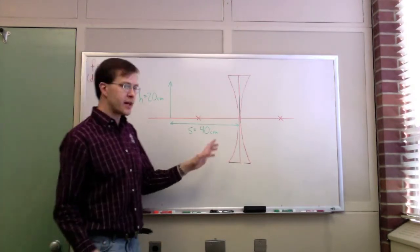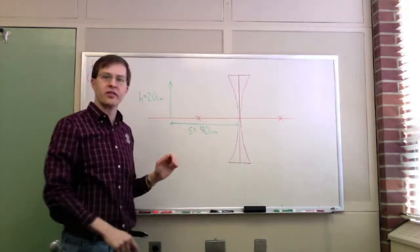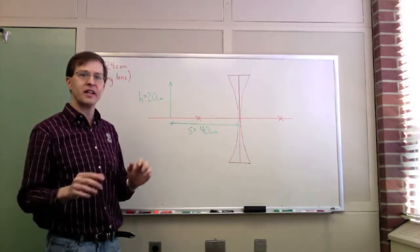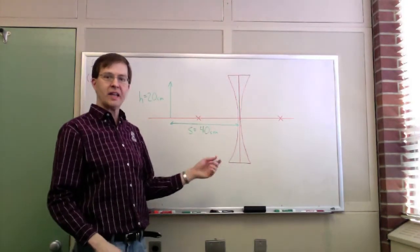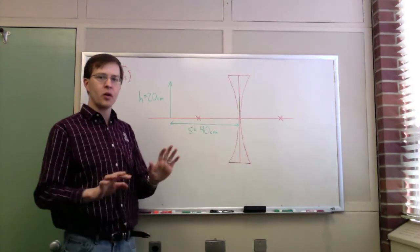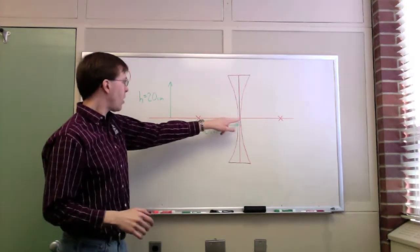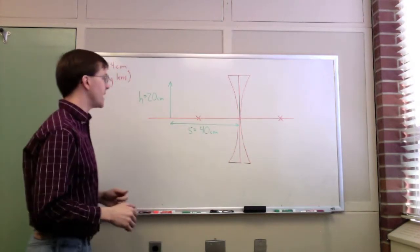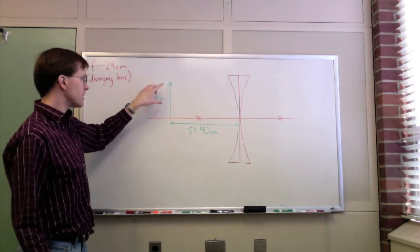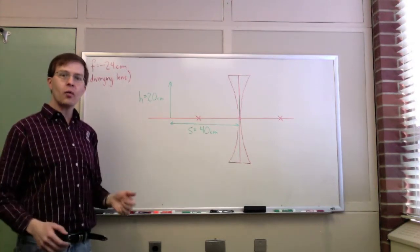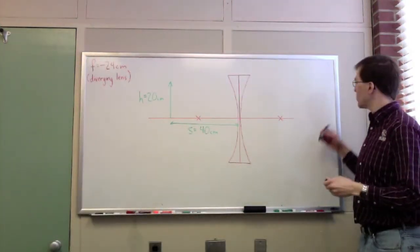The focal length measures 24 centimeters. In my diagram I've drawn the central axis of the lens and a straight vertical line representing the center of the lens, since we're assuming an infinitely thin lens approximation. I've also drawn a cartoonish concave lens shape just to remind myself of the lens type. I've marked the two focal points 24 centimeters away on each side, and placed an object 40 centimeters from the lens, 20 centimeters tall.